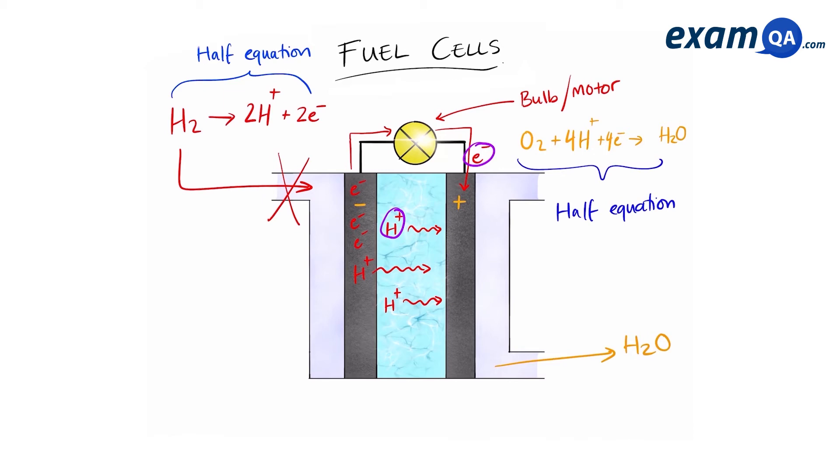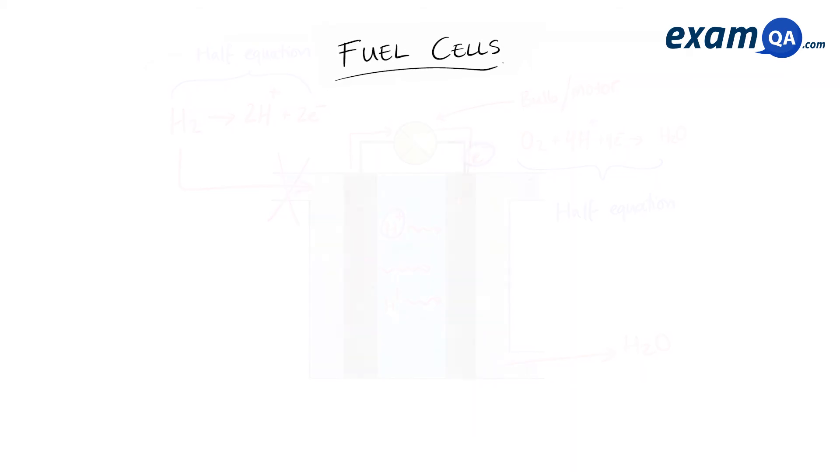So finally, they might ask you to write down what the overall equation is for the fuel cell. To answer that, we're going to look at our two half equations and then try to combine it. I've written out both half equations that occur at each electrode and also balanced it. To find the overall equation, we need to balance the number of electrons in both half equations.